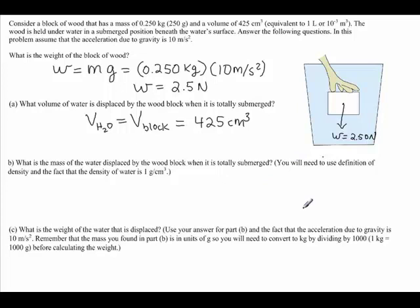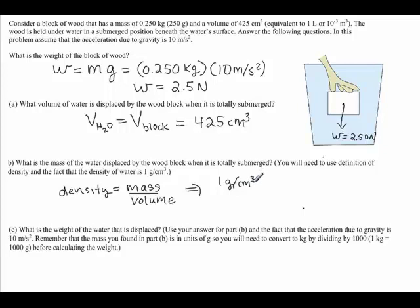What is the mass of water displaced by the wood block when it is totally submerged? We know the displaced water has a volume of 425 centimeters cubed. We can use the definition of density and the fact that the density of water is 1 gram per centimeter cubed. Writing the density formula: density equals mass per unit volume, so for the water, 1 gram per centimeter cubed equals the mass of the water divided by 425 centimeters cubed.